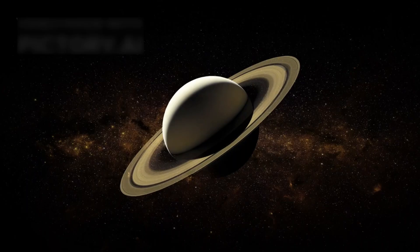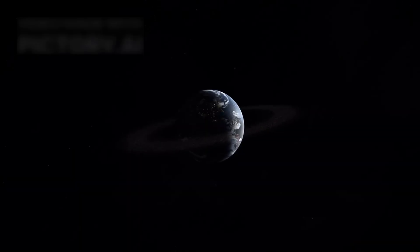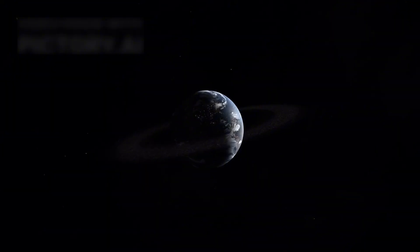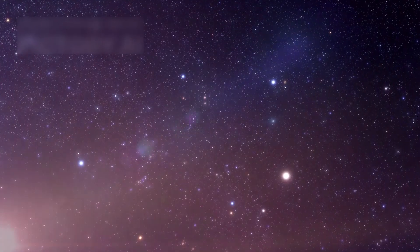In November 1980, it reached Saturn and revealed the true complexity of its rings. Once thought simple, the rings turned out to be shaped by tiny shepherd moons and rich in structure. With these discoveries, textbooks were rewritten.